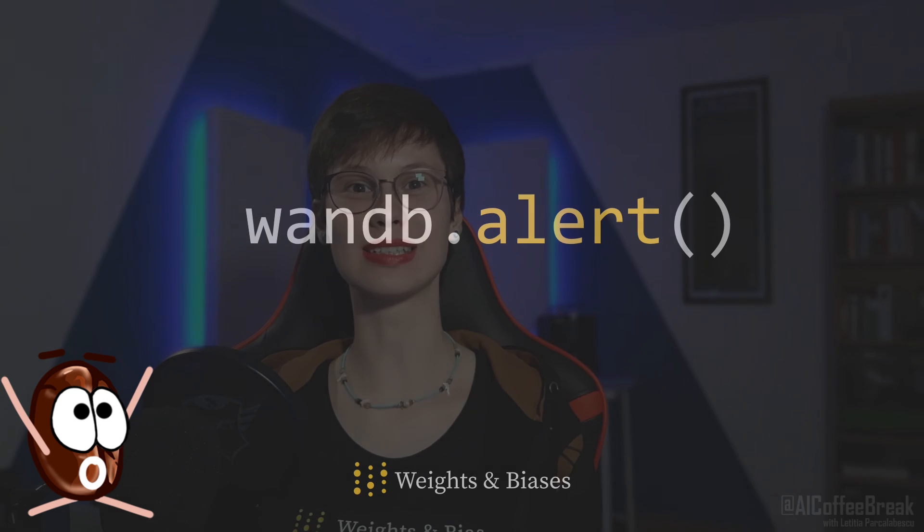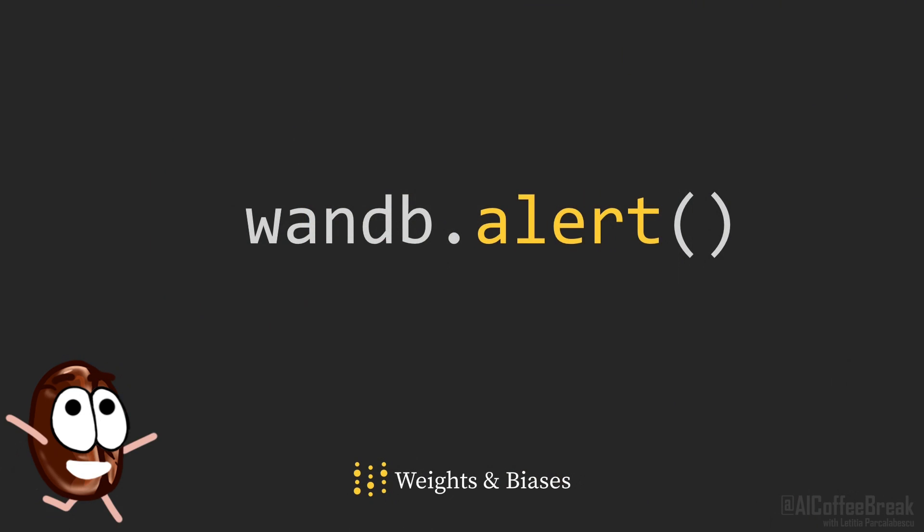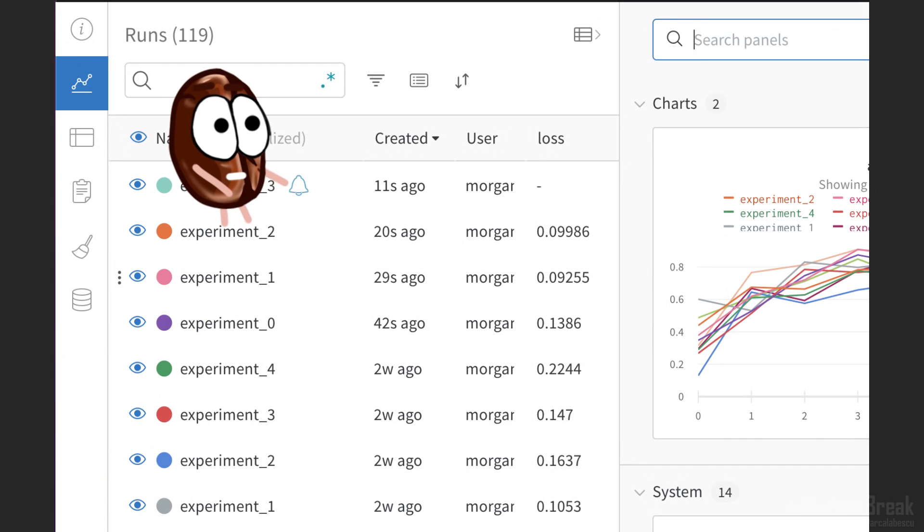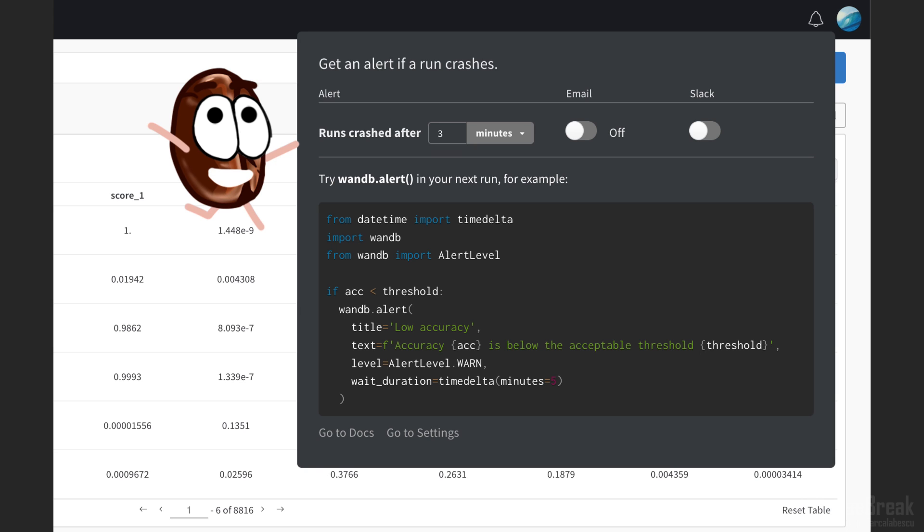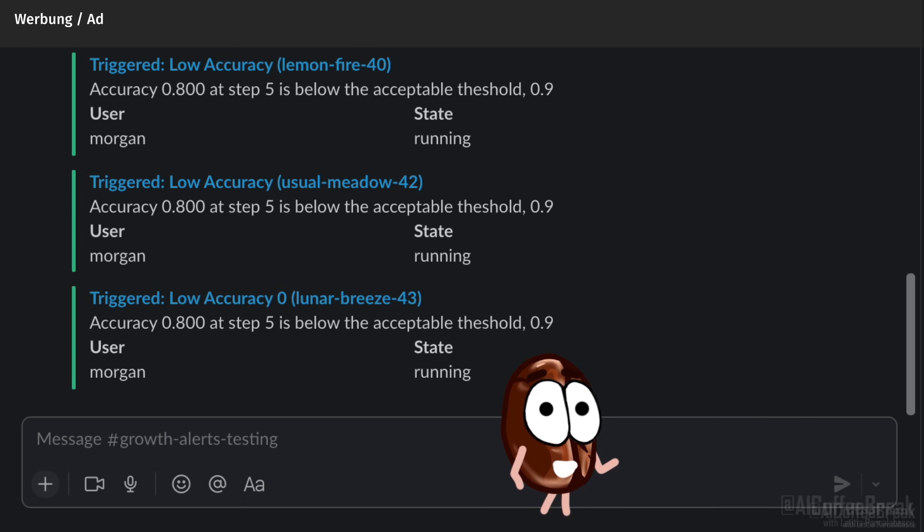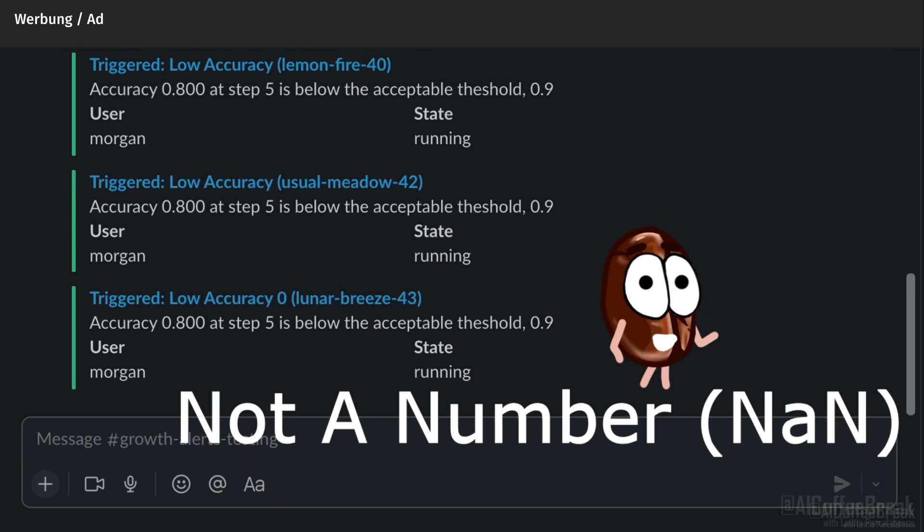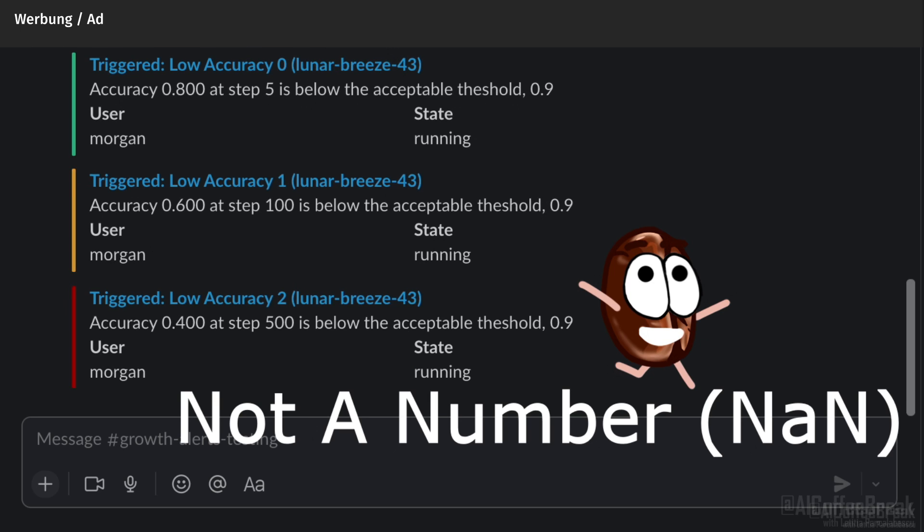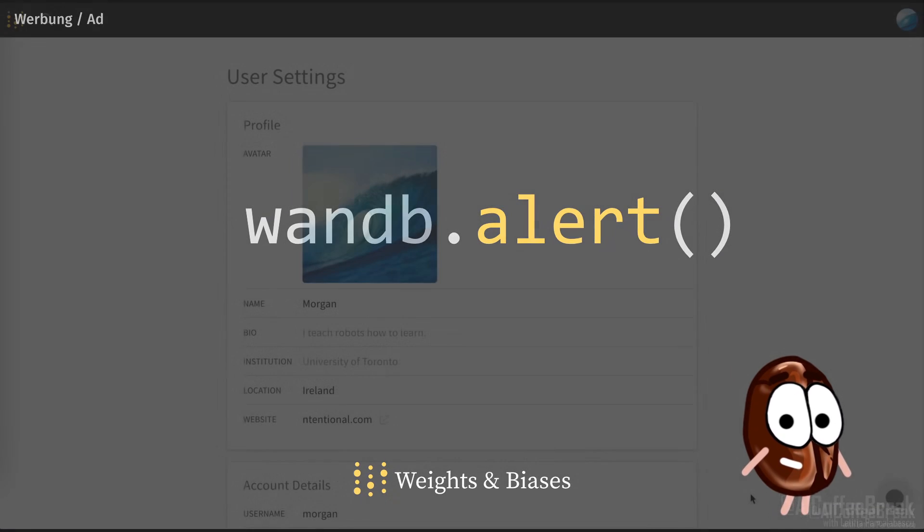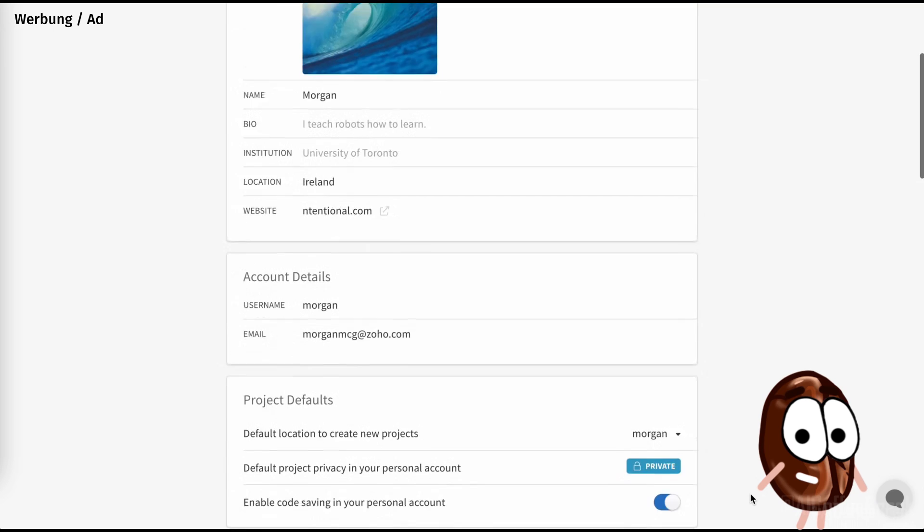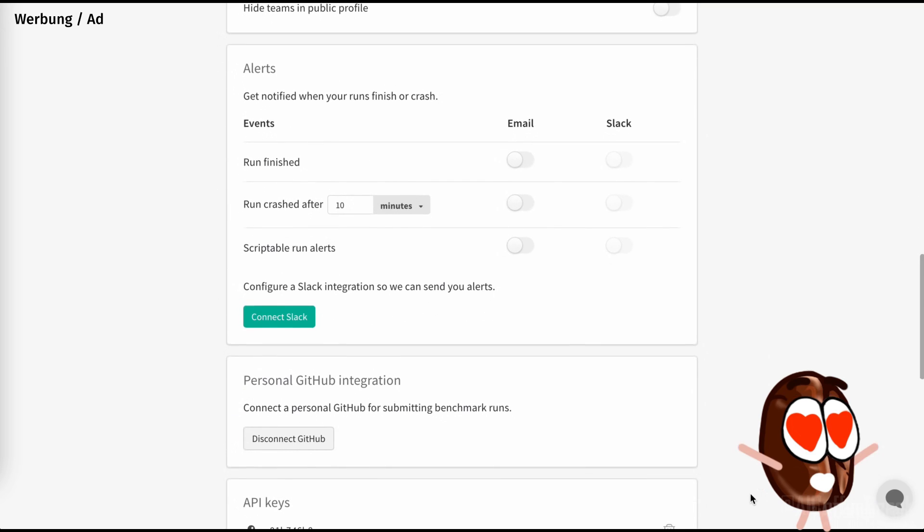We should thank Weights and Biases for supporting us for this video. Today we would like to highlight the Weights and Biases feature called Alerts, which comes in very handy when you're keeping track of your machine learning experiments. You can be notified by Slack or email if your Weights and Biases run has crashed or whether a custom trigger has been reached, such as your loss going to NaN, or a step in your machine learning pipeline has completed. Weights and Biases Alerts apply to all projects where you launch runs, including both personal and team projects.